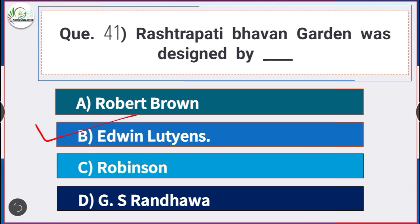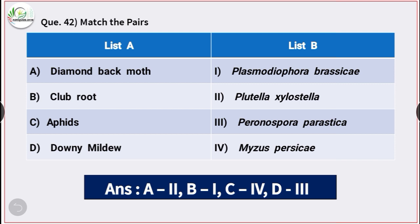Question number 42: Match the following. The scientific name of diamond back moth is Plutella xylostella. Clubroot of crucifer is caused by Plasmodiophora brassicae. Scientific name of aphid is Myzus persicae. Downy mildew is caused by Peronospora parasitica.